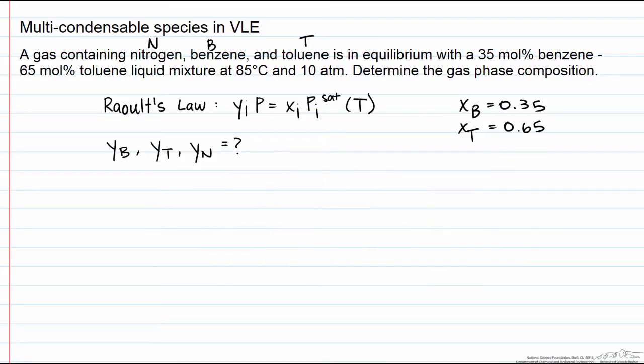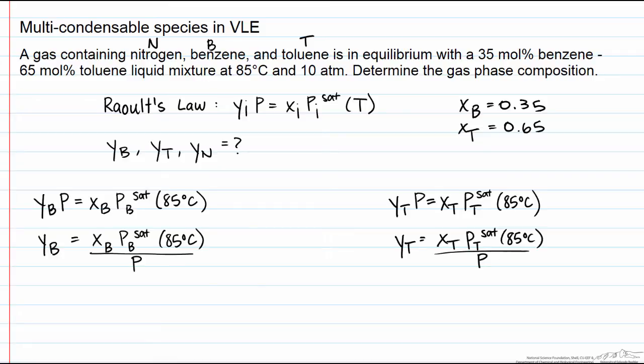So let's start by setting up the two Raoult's equations for our two condensable species. Since we're looking for the gas phase composition, we'll rewrite each of these equations in terms of our y's. Note that we write this as p sat at 85 degrees C. Since we have the temperature of the system,